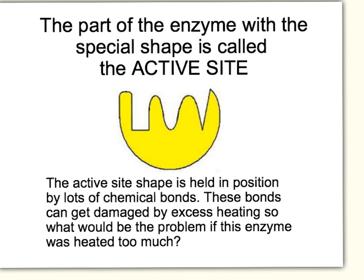The specific part with the special shape is called the active site. The active site of an enzyme is where the substrate fits and it has the really specialised shape. It's very important that shape doesn't alter — if it does, the substrate won't fit and the reaction won't take place. The bonds can get damaged by excess heating: if the temperature rises too high, that special shape is destroyed and it's no longer going to fit with the substrate molecule.